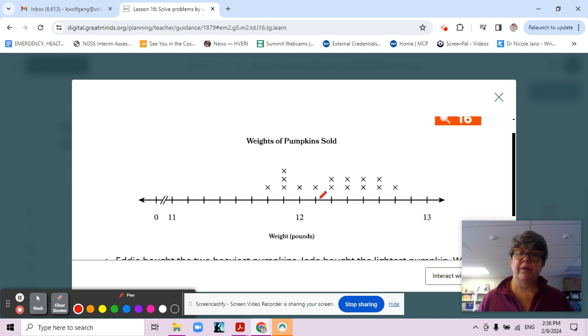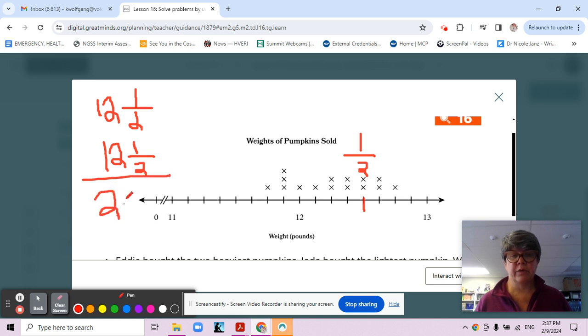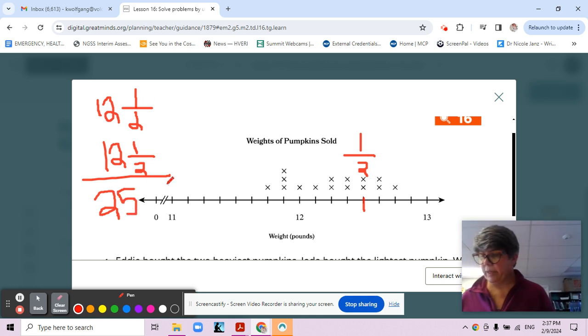One eighth, two eighths, three eighths, four eighths. Four eighths is the same as one half, and there's two of them, right? So 12 and a half plus 12 and a half, because one half plus one half is going to give us a grand total of 25 pounds. So the answer is 12 and a half. Very good.